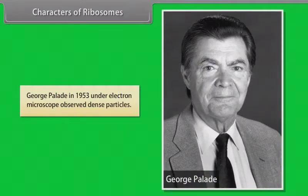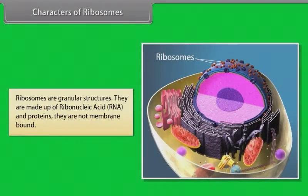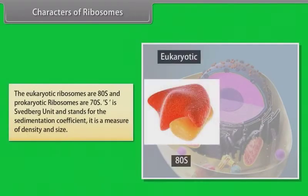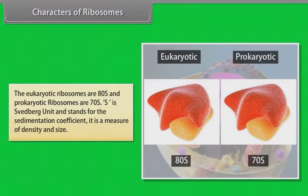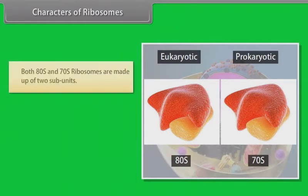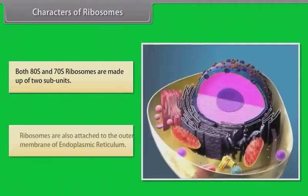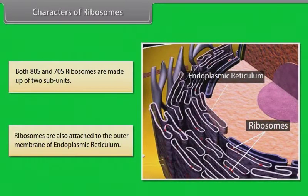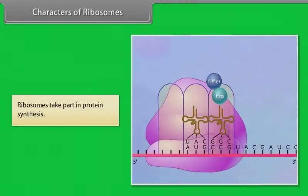George Palade in 1953 observed dense particles under the electron microscope, which we now call ribosomes. Ribosomes are granular structures made of ribonucleic acid (RNA) and proteins. They are not membrane-bound. Eukaryotic ribosomes are 80S and prokaryotic ribosomes are 70S. S is the Svedberg unit and stands for the sedimentation coefficient — a measure of density and size. Both 80S and 70S ribosomes are made up of two subunits. Ribosomes are also attached to the outer membrane of the endoplasmic reticulum and take part in protein synthesis.